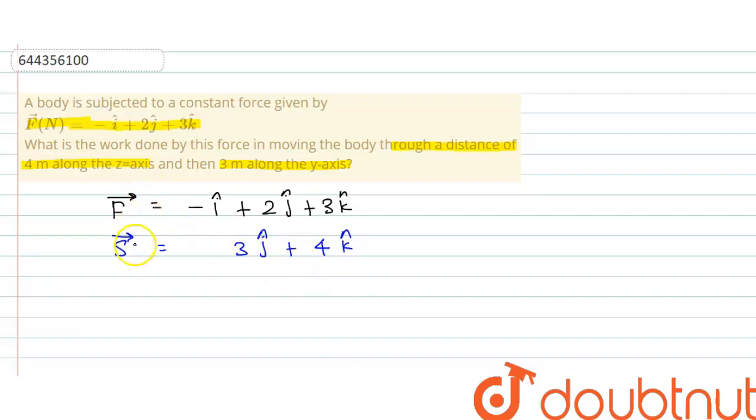So here is force and displacement. We can calculate work done using formula force dot displacement. As we know that work done by force F is equal to force dot displacement. Now calculate dot product. In this case dot product is equal to product of x component plus product of y component plus product of z component.